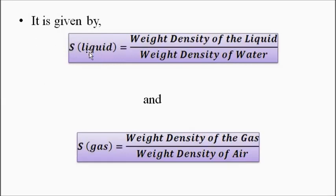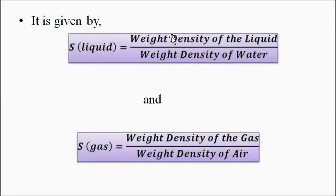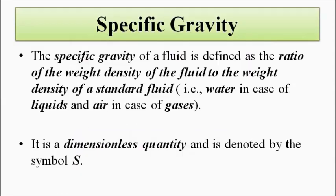Specific gravity is denoted by the symbol S. For any liquid, specific gravity is given by the weight density of that liquid divided by the weight density of water. For a particular gas, it is the weight density of that gas divided by the weight density of air. It is a dimensionless quantity because we are taking the ratio of similar properties — weight density by weight density — so it has no units.